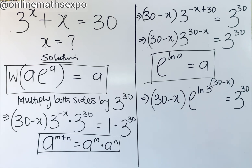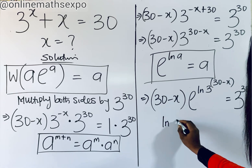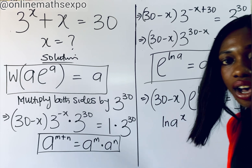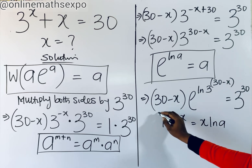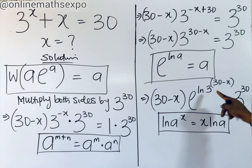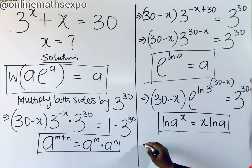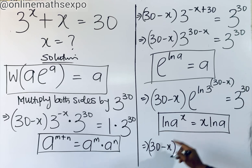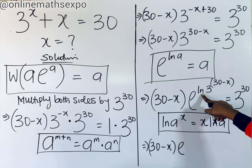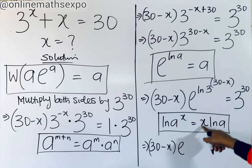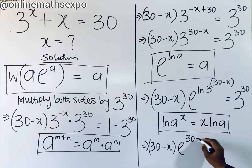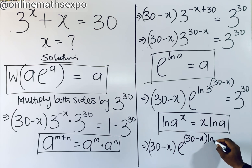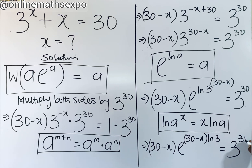Remember that when you have ln of a to the power of x, the power will always multiply — so you have x times ln of a. Applying this rule, we have 30 minus x multiplied by e to the power of 30 minus x times ln of 3, equal to 3 to the power of 30.